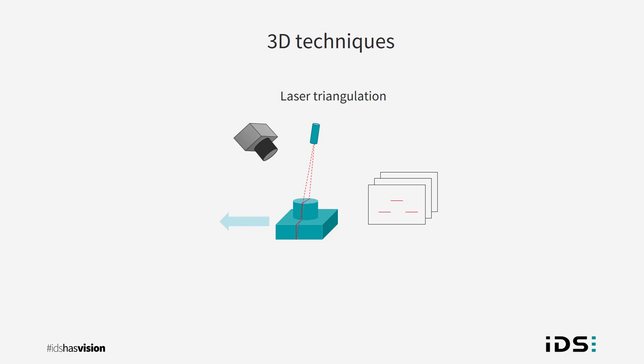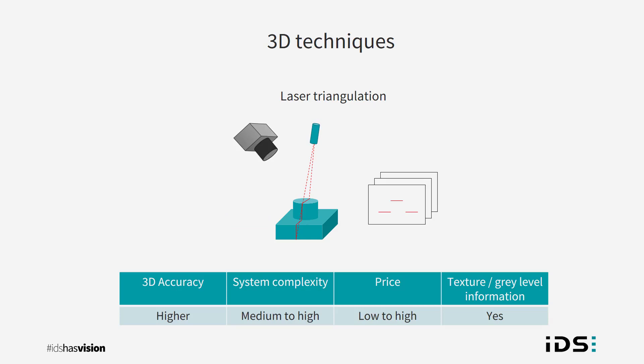Laser triangulation or sheet of light profiling uses a projected line of light, either LED or laser, across the target. As the object moves through the camera's field of view, or the camera moves over the object, images of the line as it deviates over the object are collected. By collecting these slices it is possible to build a 3D profile. This technique can be fairly cost effective and produces excellent 3D resolution, and it's possible to extract the surface texture or grey level information also. However, the application always requires motion of some kind, which takes time and is generally more fiddly to set up.